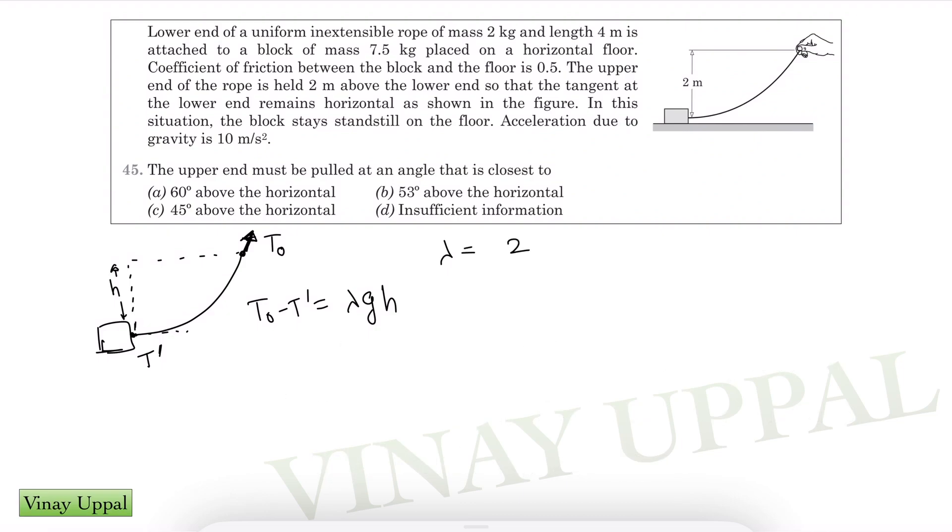We know lambda is mass per unit length, so 2 kg divided by 4 meters gives 0.5. So I have one equation: T0 minus T dash is 0.5 into 10 into the height which is given to us as 2 meters, so that equals 10.